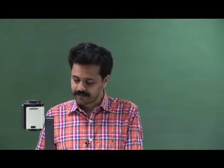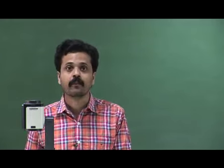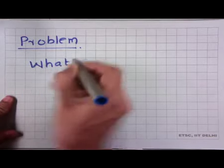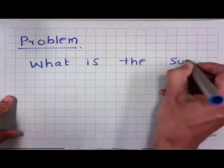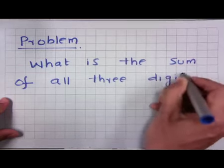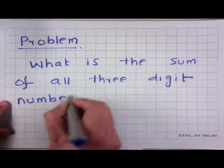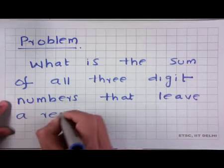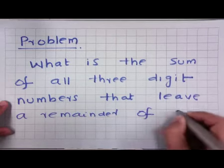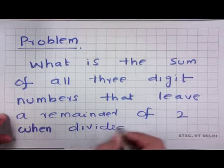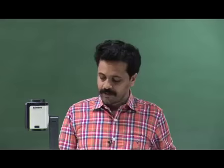Welcome to Sequence and Series. This lecture is intended to explore some more problems on these topics. What is the sum of all three-digit numbers that leave a remainder of 2 when divided by 3? To start with, let us have the following observation.